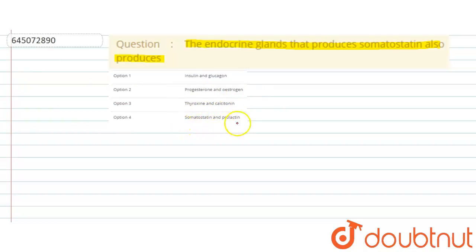And the last one says somatostatin and prolactin. So firstly, what we will do in this question is understand a little bit about somatostatin, and then we will go back and select the correct option. The very basic thing about somatostatin is that it is produced from the hypothalamus. So the hypothalamus is the one producing somatostatin.